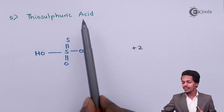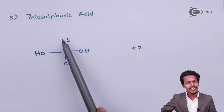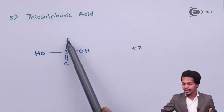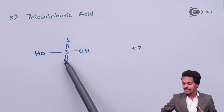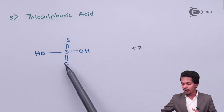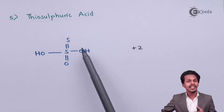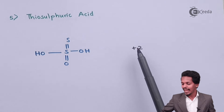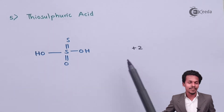Next is thiosulphuric acid, which is very similar to sulfuric acid. The only difference is that one oxygen atom is replaced by a sulfur atom. So we have one sulfur double-bonded to oxygen and one sulfur double-bonded to sulfur, with the remaining two valencies satisfied by OH groups. The oxidation state of sulfur is plus 2.